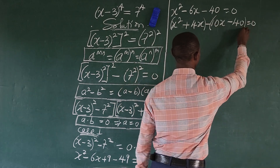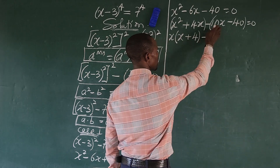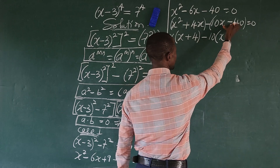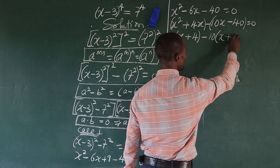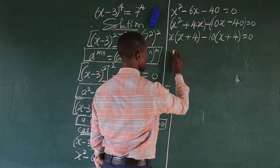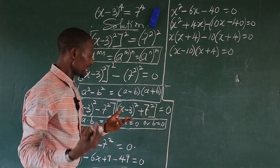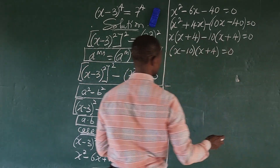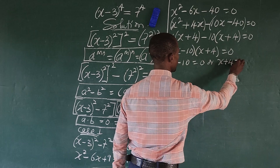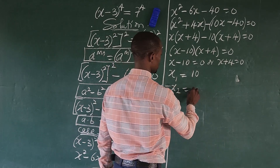We put this in brackets. What is common in the first pair is x, so we have x(x + 4). What is common in the second pair is 10, so we have minus 10(x + 4), equal to zero. We discover that (x + 4) appears in both brackets, so we take it out. This now gives us (x minus 10)(x plus 4) equals zero. Applying the zero product rule: x minus 10 equals zero, giving x equals 10, or x plus 4 equals zero, giving x equals minus 4.